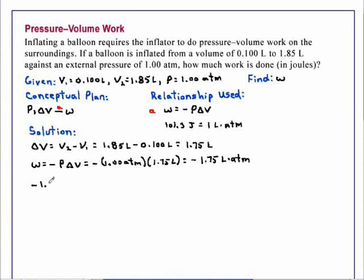Minus 1.75 liter atmospheres can be converted to joules by using the conversion factor that there are 101.3 joules in 1.75 liter. And this gives us an answer in joules, which is minus 177 joules.